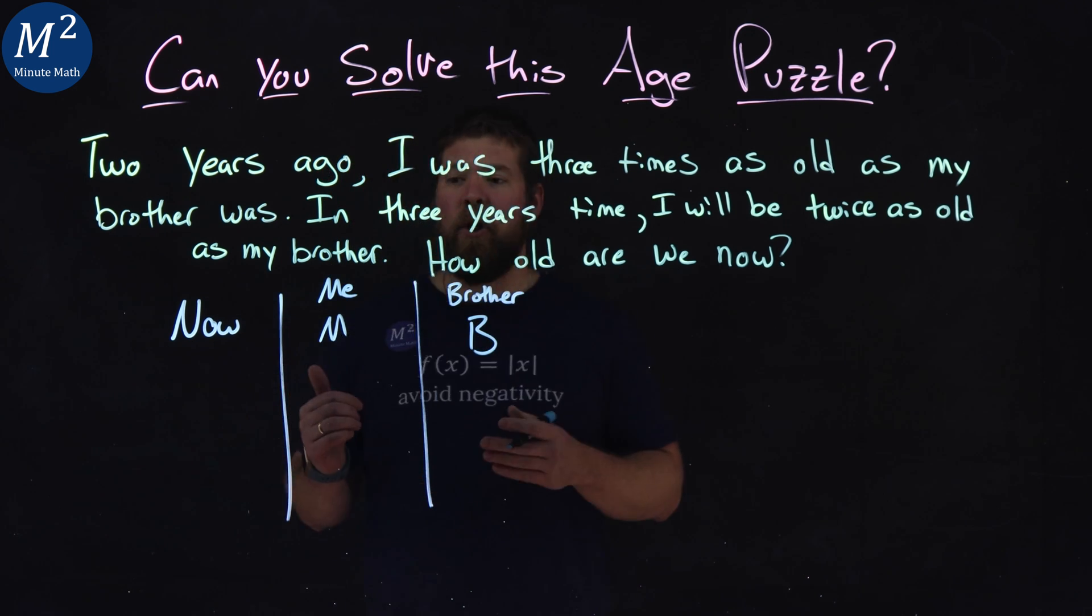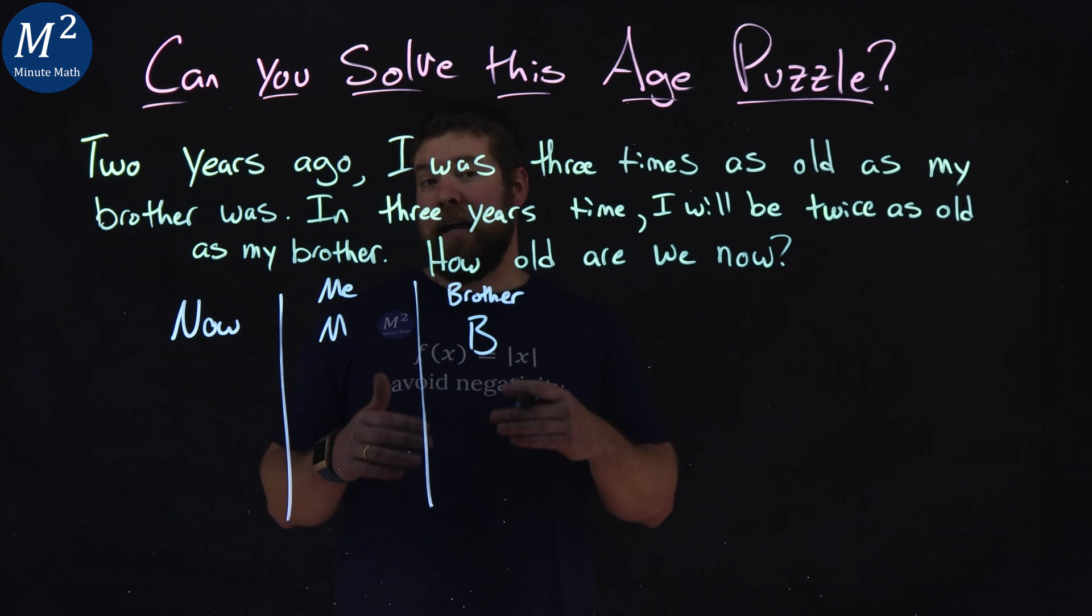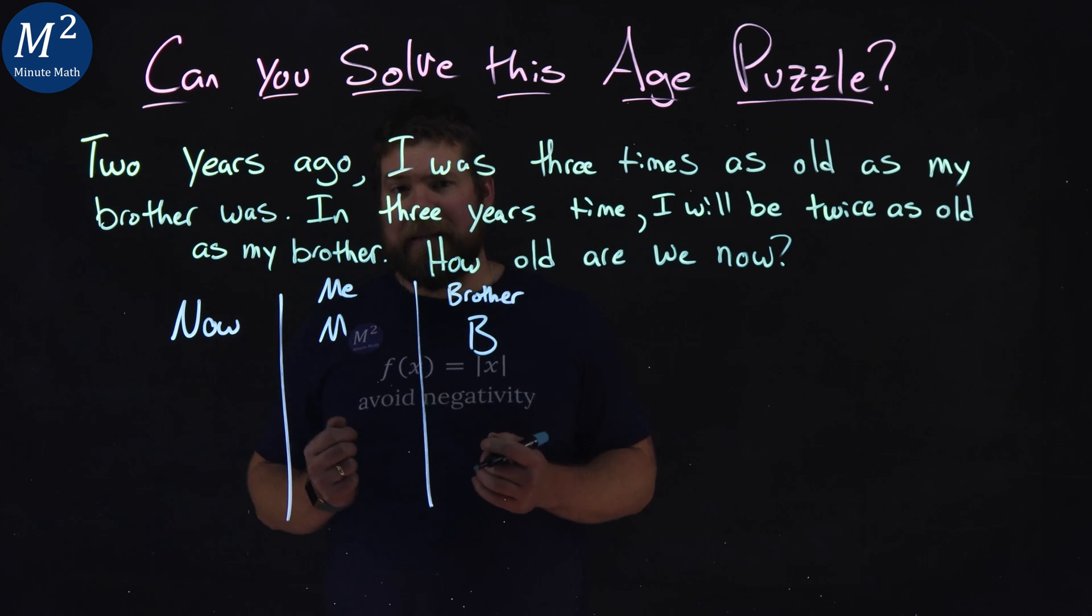All right, so right now we have my age is M and my brother's age is B. That's our present time.